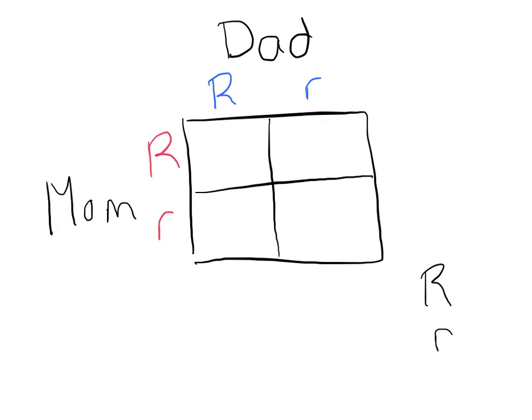A Punnett square basically gives us all of the different combinations that could be made between any sperm and egg that are produced by this particular set of parents.